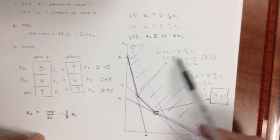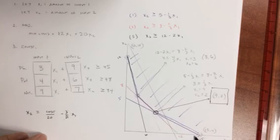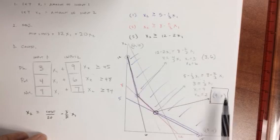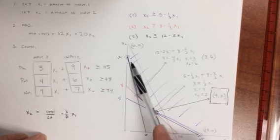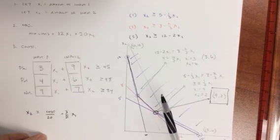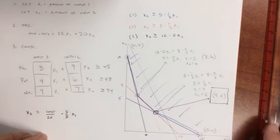Now, if looking at the slopes doesn't work for you, the other way to do that is to look at all four corner solutions, so 0, 12, 3, 6, 9, 2, 15, 0, and plug them into the cost function and look to see which one of these four is going to minimize your costs. And if you do that, the solution will still be 9, 2.